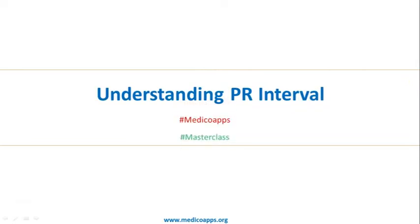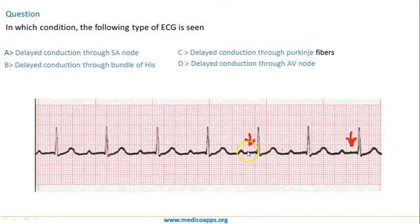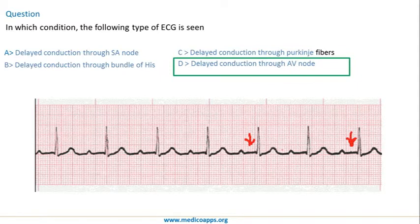In this video lecture we will look at some of the changes in the PR interval and how it may help us in diagnosing certain cardiac conditions. Let's start by looking at a question: in which of the following is this ECG seen? We can clearly identify the P wave, the QRS complex, and the PR interval. Normally it is three to five small squares, but in this case it is around seven or eight small squares, indicating a delay in conduction through the AV node.